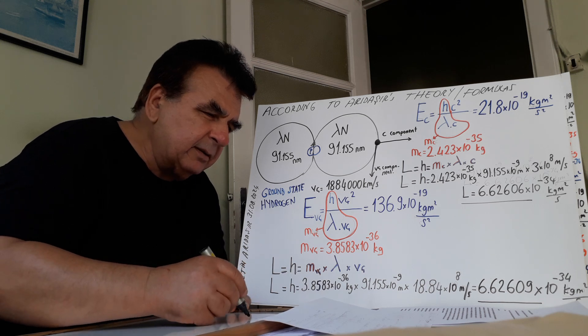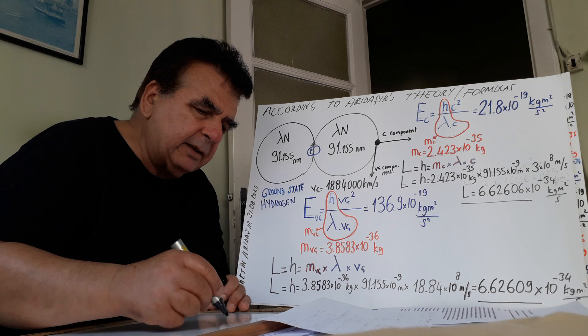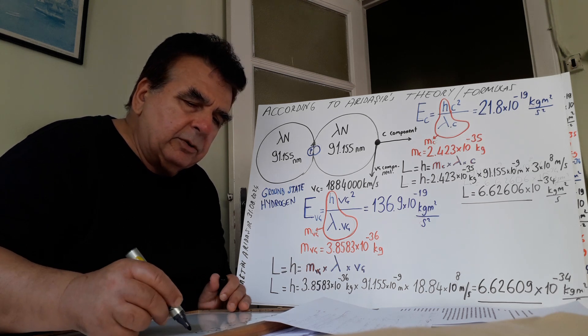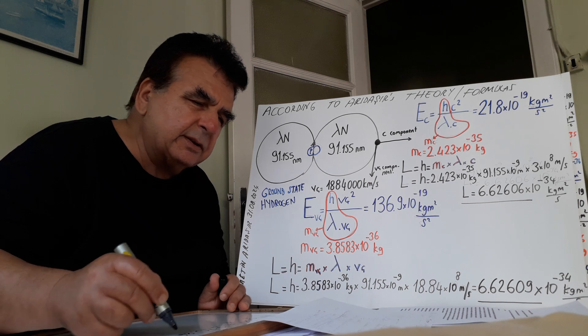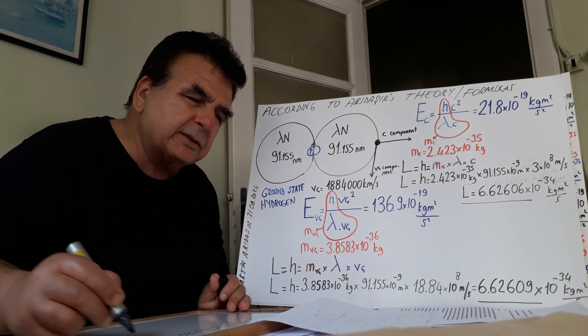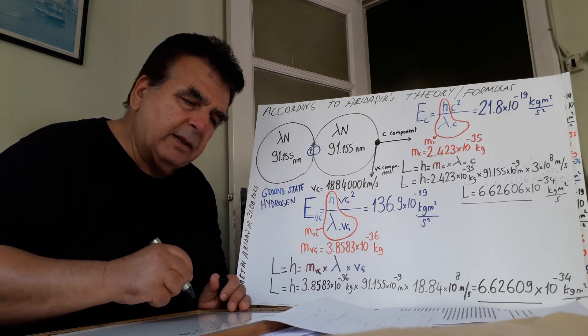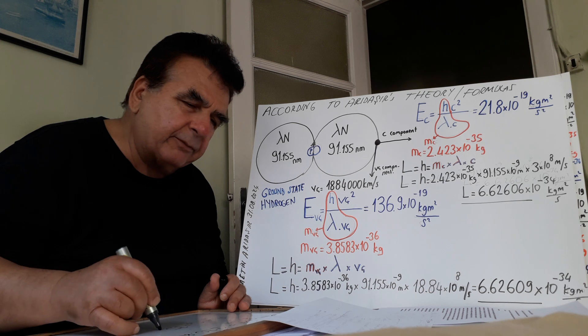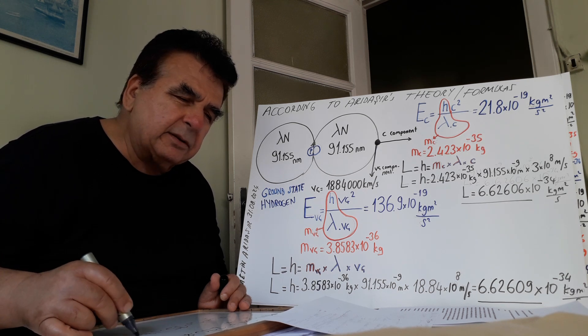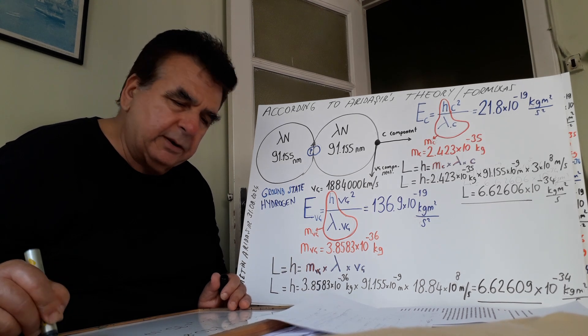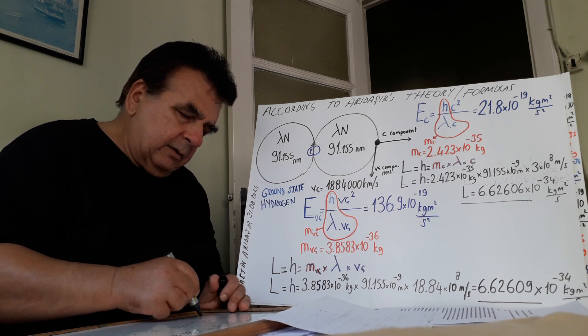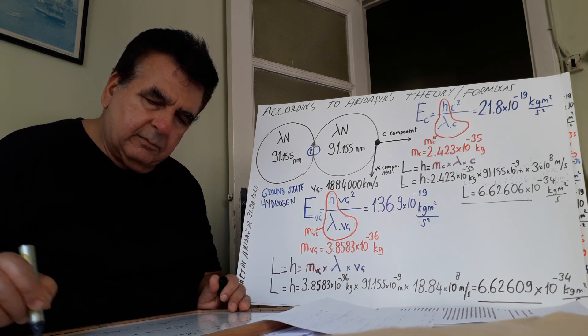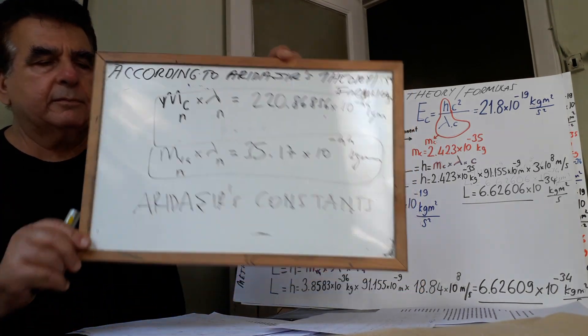M C N multiplied by lambda N equals to 222,220.86856 times 10 to the minus 44 kilogram meter, and N V G N multiplied by lambda N is equal to 35.17 times 10 to the minus 44 kilogram meter. My constants.